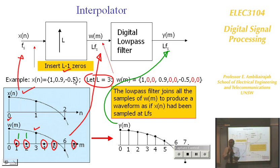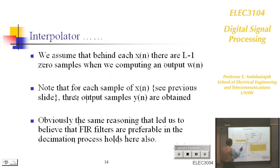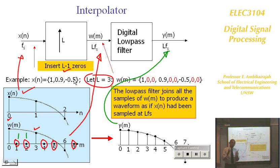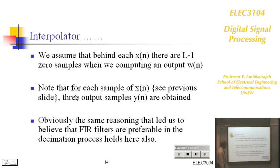Look at those two diagrams carefully — two different operations, two different arrangements. The FIR filter is needed for both interpolation and decimation for the same computational efficiency reasons explained earlier.